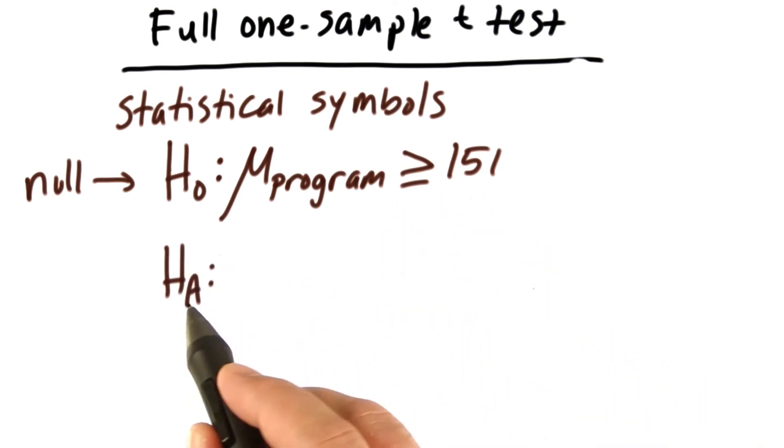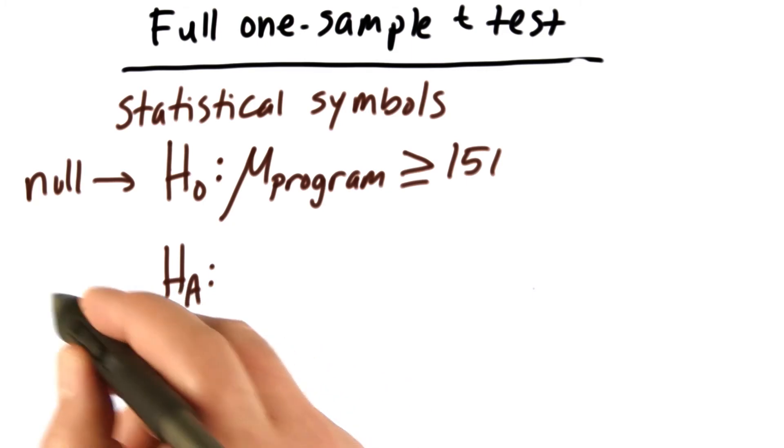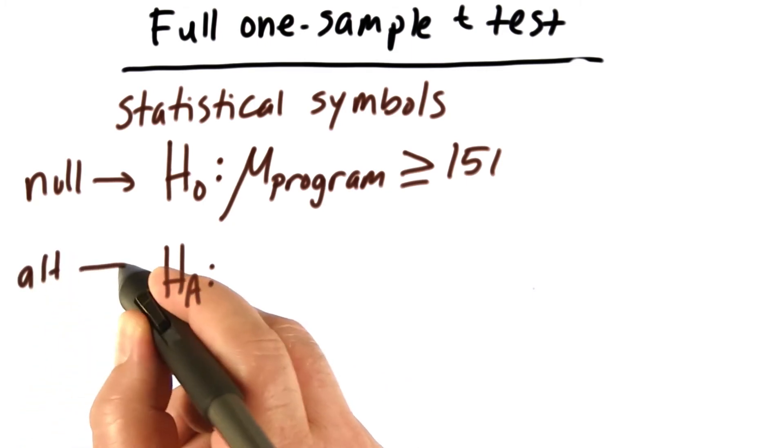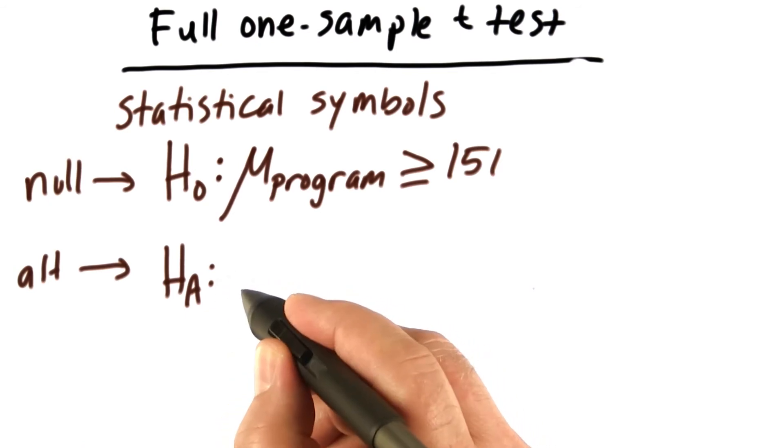Now let's write the alternative. We use an H with subscript A for alternative hypothesis. I'll write alt over here to remind us that that's what it is. We have a colon in the right place.